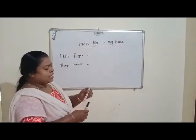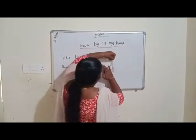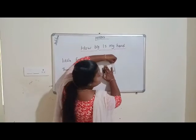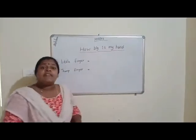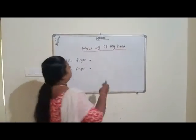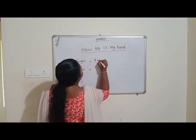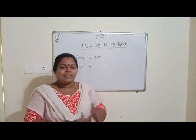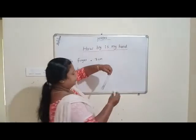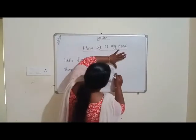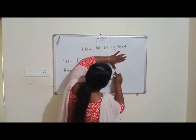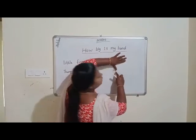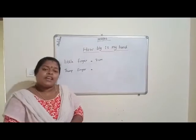So how many cm is my little finger? My little finger is 7 cm. Now I will put my thumb finger. Let us measure. My thumb finger is 5 cm.